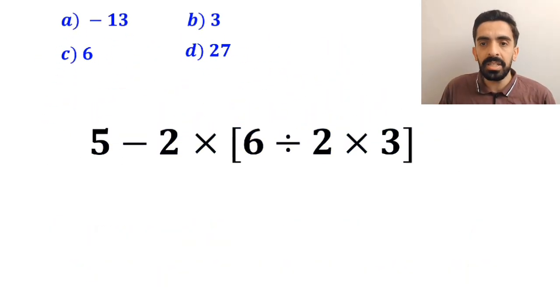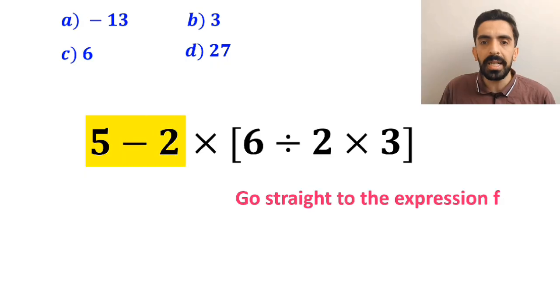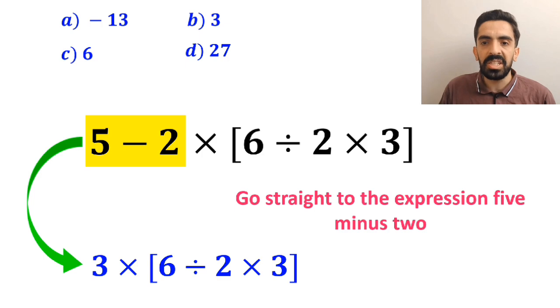Many people at first go straight to the expression 5 minus 2, which I have highlighted in yellow, and instead of this expression, they write 3 multiplied by 6 divided by 2 times 3 inside the brackets.